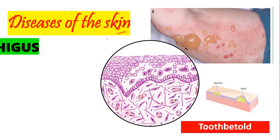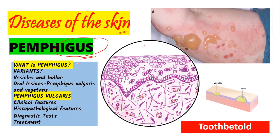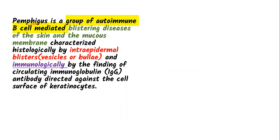Good evening, everyone. In this video, we're going to start talking about one of the most important skin disorders, which is pemphigus. I'm going to tell you everything you need to know about pemphigus, including what it is, its variants, what are vesicles and bullae, pemphigus vulgaris and its clinical features, histopathological features, diagnostic tests and treatment. We will divide this topic into two halves. For more such videos, you can check out our playlist on oral pathology, oral medicine and more topics. So getting right into pemphigus, let's look at the definition first.